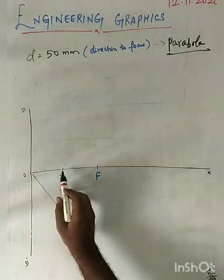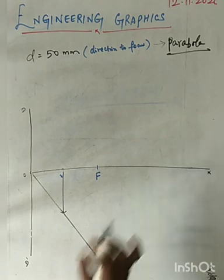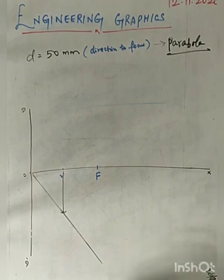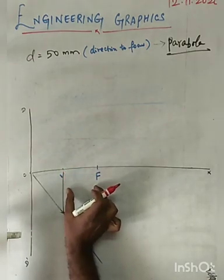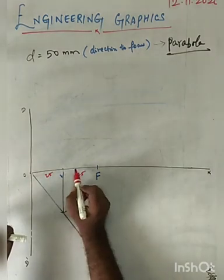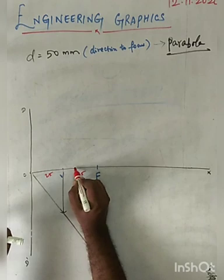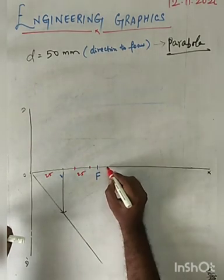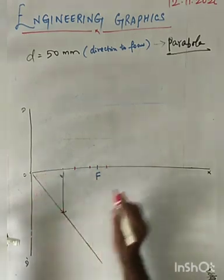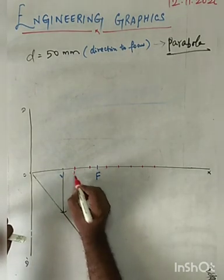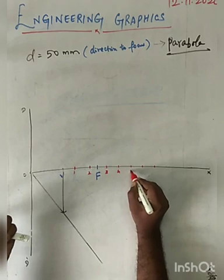Next step: from the vertex point, divide into 6 or 7 divisions, each of length 10mm. That data would not be given in the question — just keep it in mind. We divide the line into segments of 10mm each. The value of VF is 25mm since we took the midpoint. From the vertex, I am going to divide into segments of 10mm — approximately 1, 2, 3, 4, 5, 6, 7. Seven divisions is more than enough.